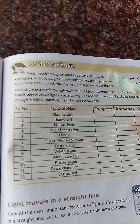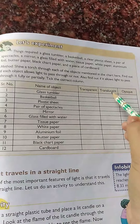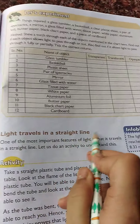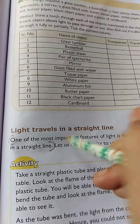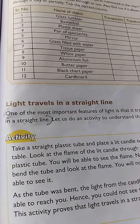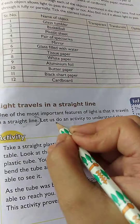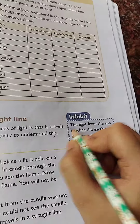There is an experiment - I will put its photo at the end of the video so you can do it and understand what is transparent, translucent, and opaque. Now, light travels in a straight line. One of the most important features of light is that it travels in a straight line. This can come in exam questions. Infobite: The light from the Sun reaches the Earth in 8.33 minutes.